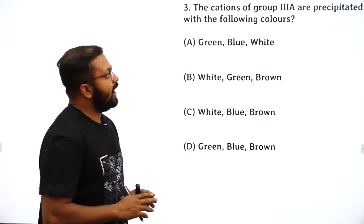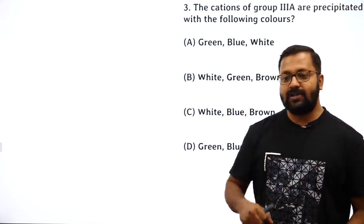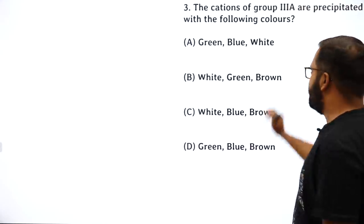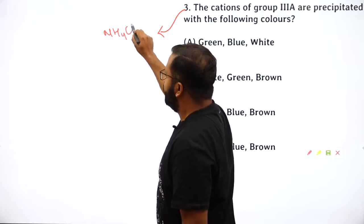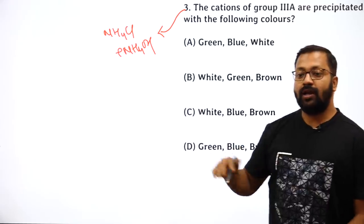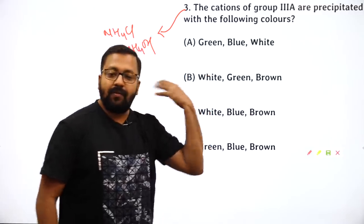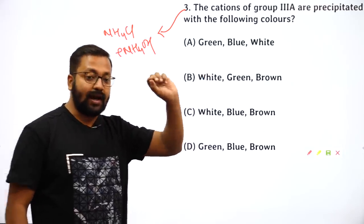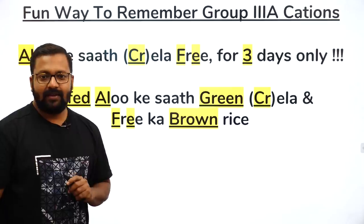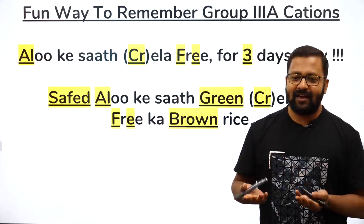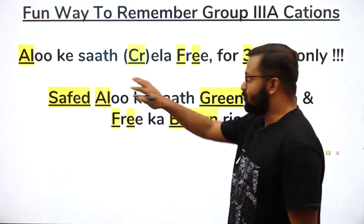Next question: Group 3A cations are precipitated in which colors? All Group 3A precipitates are obtained as hydroxides. The group reagent for precipitating Group 3A is NH₄Cl plus NH₄OH buffer. A buffer solution is used rather than a directly basic solution. The ions in Group 3A are Al³⁺, Cr³⁺, and Fe³⁺ — all present in +3 oxidation state.